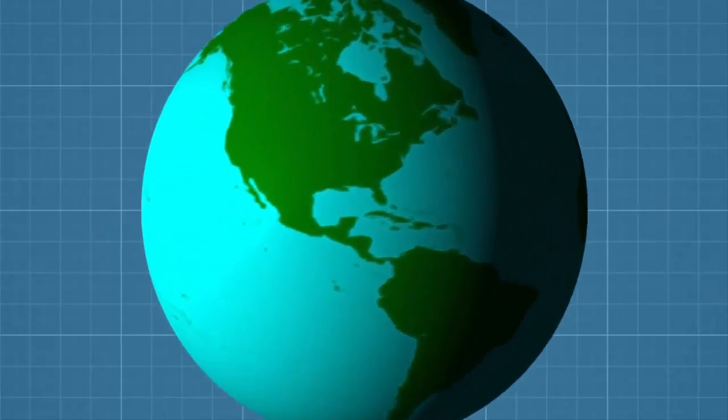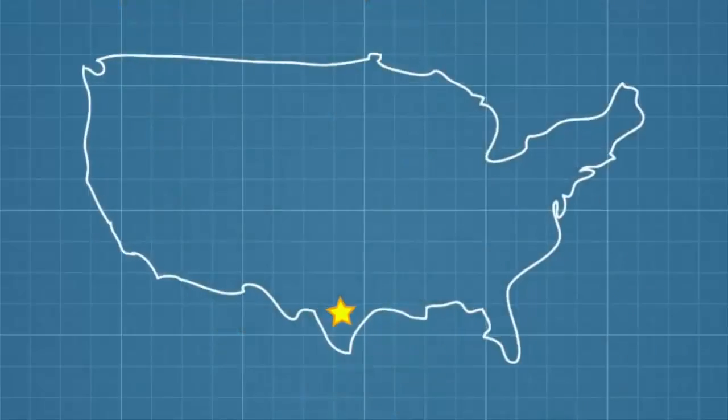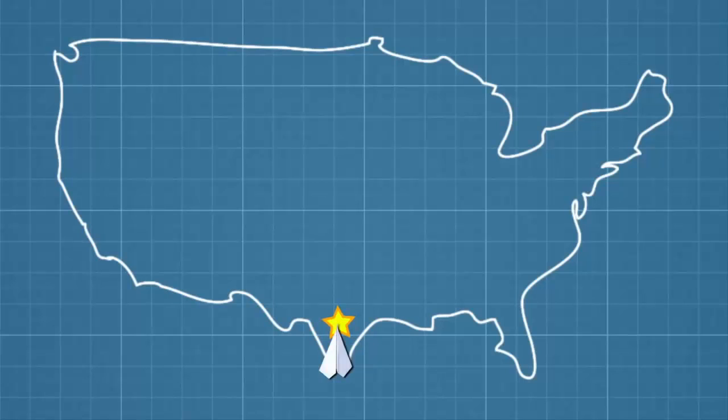So, imagine you were standing in Texas and had a magic paper airplane that could travel hundreds of miles. If you threw your airplane directly northward, you might think it would land straight north, maybe somewhere in Nebraska.